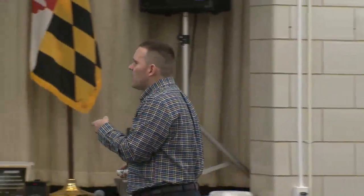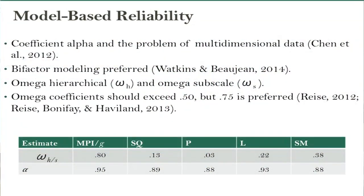Omega coefficients tell us how we're actually interpreting the test. We want to see omega coefficients exceed 0.50. With the KABC-2, Cronbach's Alpha is at the end and omega is at the top. For G: really good — MPI. Sequential processing: 0.13. Planning — remember I showed you the fluid reasoning subtests had like no variance — 0.03. Learning: 0.22. Simultaneous processing: 0.38. There's just not enough there for confident clinical decision-making. We're not measuring that skill well enough. It's not that those abilities aren't real — it's that we're not measuring them well.